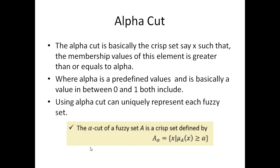Alpha cut is basically used to uniquely represent each fuzzy set. What alpha cut represents is all the values where the membership value of that specific element is greater than or equal to alpha. Alpha is basically a predefined value and its value is between 0 and 1, inclusive. We will discuss how to represent each fuzzy set uniquely using alpha cut in later videos. Currently we should know that the alpha cut of a fuzzy set A is basically a crisp set, defined as A_alpha equals all elements of X where the membership value of X is greater than or equal to alpha.